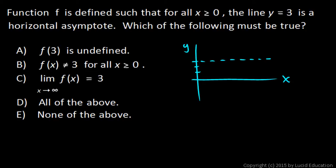f of 3 is undefined. So f of 3 is the value of the function at x equals 3. The fact that this is a horizontal asymptote means that the graph must approach this line without touching it, but it doesn't tell us anything about the value of the function at x equals 3.